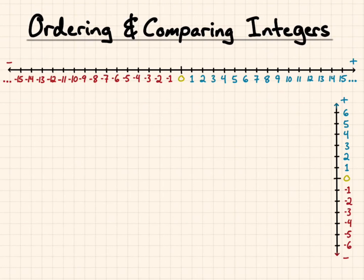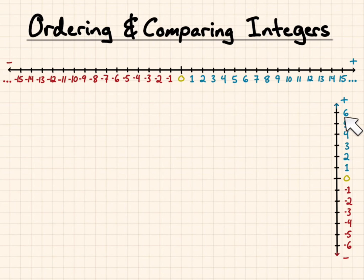This is our notes on ordering and comparing integers. We're going to be looking at horizontal number lines and vertical number lines, including negative values.